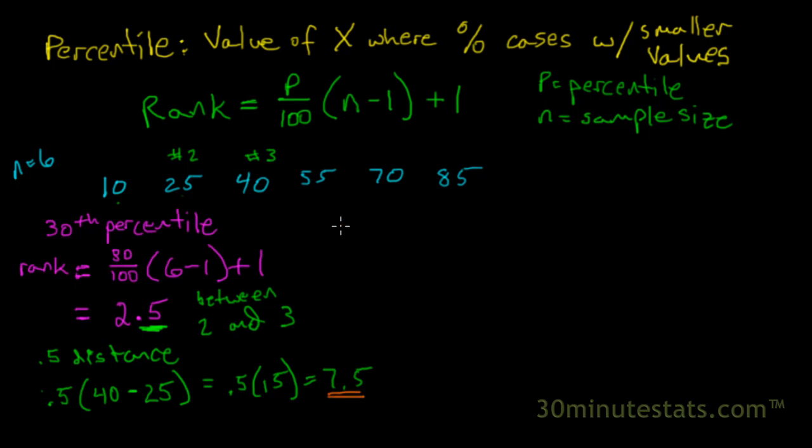We can take 25 plus 7.5, which is going to equal 32.5. So 32.5 represents the 30th percentile in this distribution. That would be the 30th percentile, 32.5.